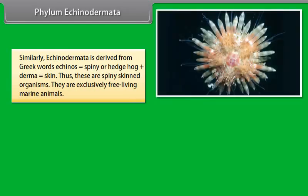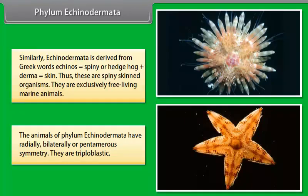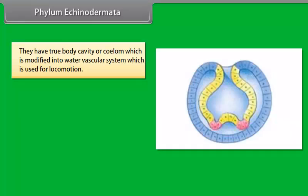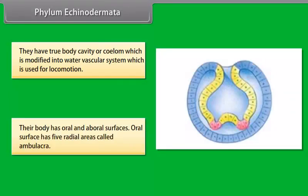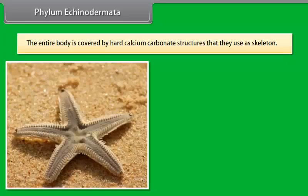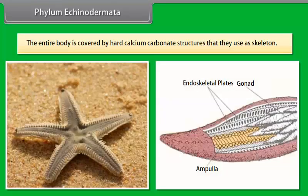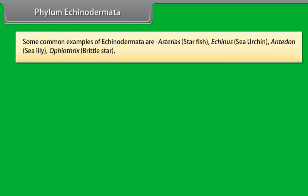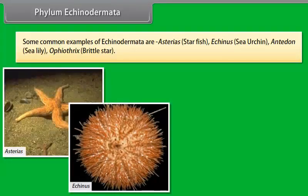Phylum Echinodermata. Echinodermata is derived from Greek words 'echinos' meaning spiny or hedgehog, plus 'derma' meaning skin. Thus, these are spiny-skinned organisms. They are exclusively free-living marine animals. The animals of Phylum Echinodermata have radially, bilaterally, or pentamerous symmetry. They are triploblastic. They have a true body cavity or coelom, which is modified into a water vascular system used for locomotion. Their body has oral and aboral surfaces; the oral surface has five radial areas called ambulacra. The entire body is covered by hard calcium carbonate structures used as skeleton. Common examples are Asterias (Starfish), Echinus (Sea Urchin), Antedon (Sea Lily), and Ophiothrix (Brittle Star).